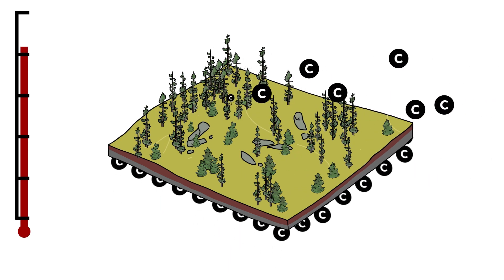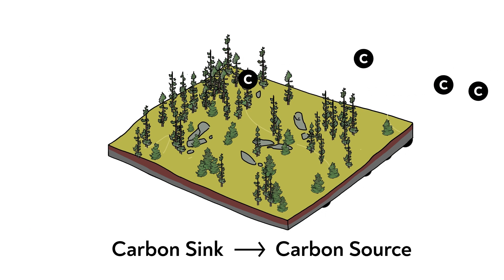These disturbances can result in peatlands becoming carbon sources, where they may emit more carbon into the atmosphere than they absorb.